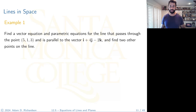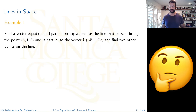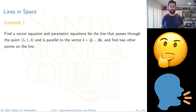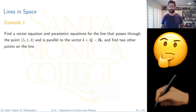Now try this: find a vector equation and parametric equations for the line that passes through a given point and is parallel to a given vector, then find two other points on the line. Think about how you would proceed, say something out loud, and try it on your own first.